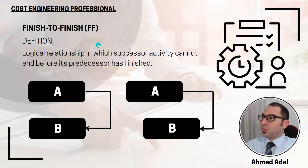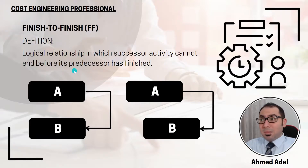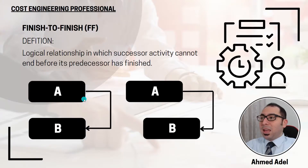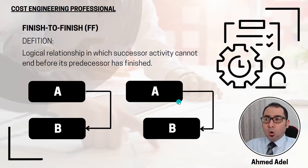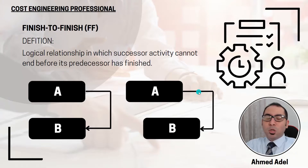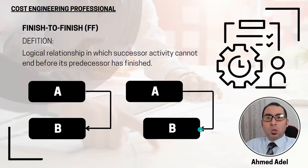The third relationship is finish-to-finish. This is a logical relationship in which an activity cannot end before the predecessor has finished. The completion of B depends on the end of activity A — in order for B to end, activity A must end as well. They can both end at the same time, or A finishes first and then after a specific period of time B also finishes.